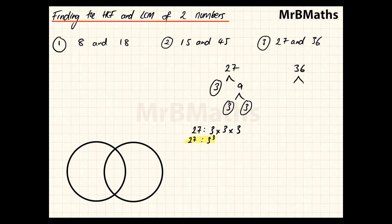Now, for 36, let's go with 2 and 18. 2 and 9. 3 and 3. So, 36 is 2, oh I forgot to circle these. 2 times 2 times 3 times 3. Again, you can simplify. 2 squared times 3 squared. And I'll just highlight the simplified version for our answer. But what we need to use for the Venn diagram is the first step. So, this one and this one here.